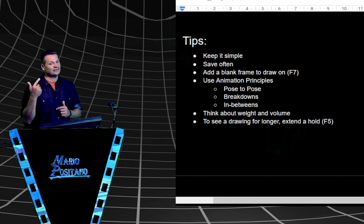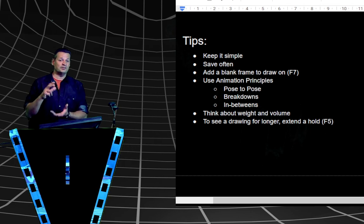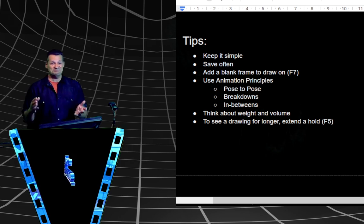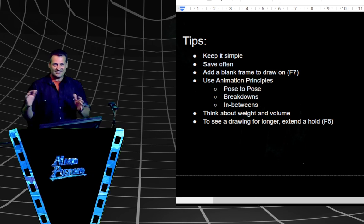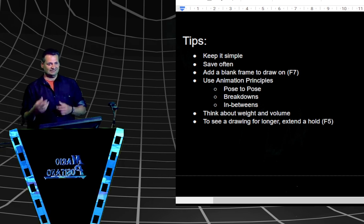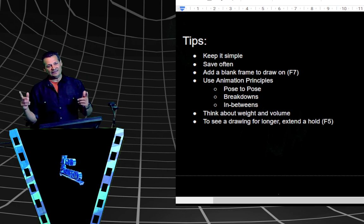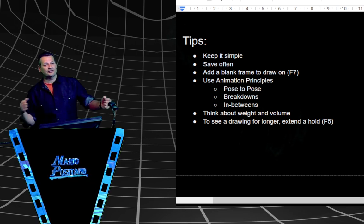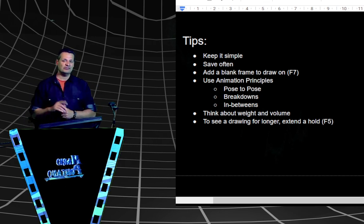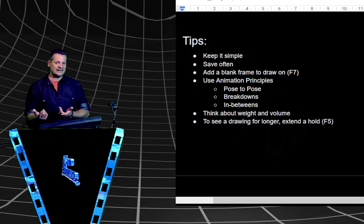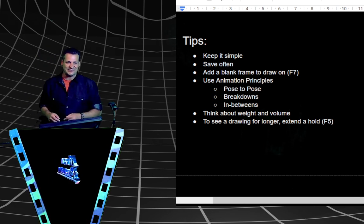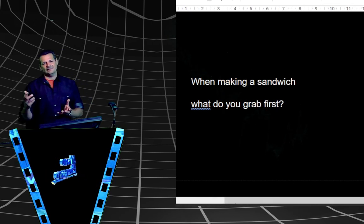To recap tips: keep it simple, save often, make blank drawing frames before you draw (F7). Think about animation principles — pose to pose, breakdown, in-betweens — those will really help you. Think about weight and volume. And to hold drawings for a long time, like your background, go to the last frame and hit F5. You'll see me do all of this — refer back to these tips at the end.